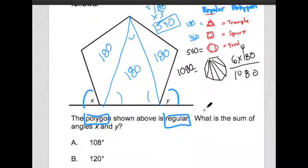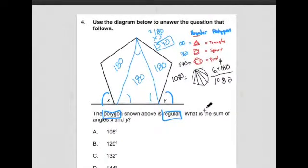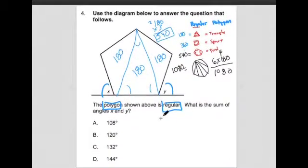Let's take a step back and go back to the original question. The original question is saying the polygon shown above is regular. What is the sum of angles x and y?